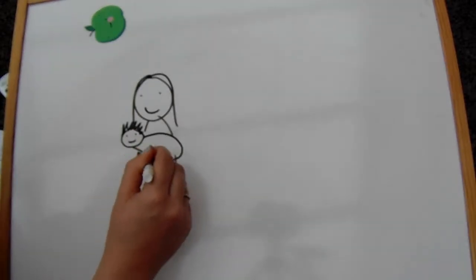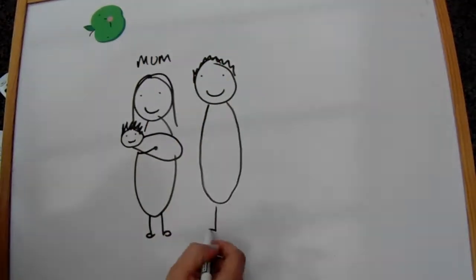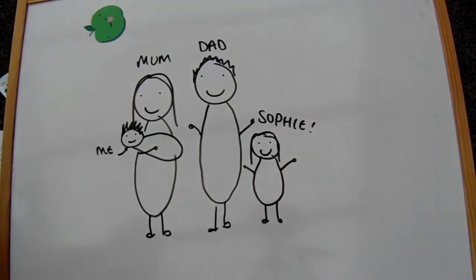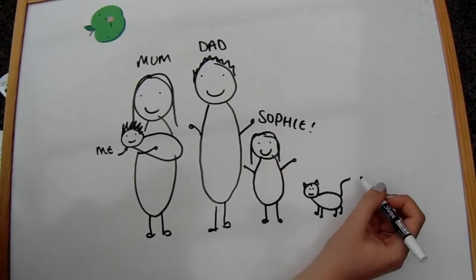So my family included my mum, my dad, my older sister Sophie and me and then we had two little cats named Magpie and Claude.